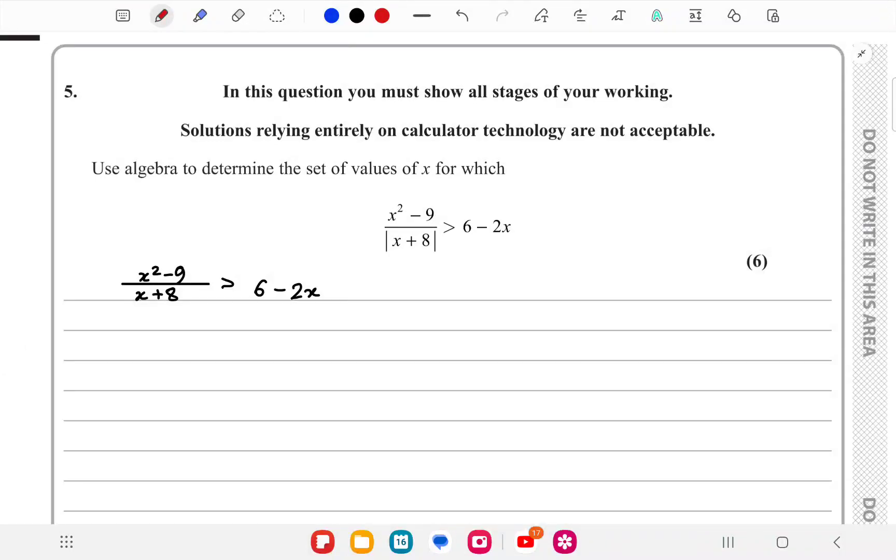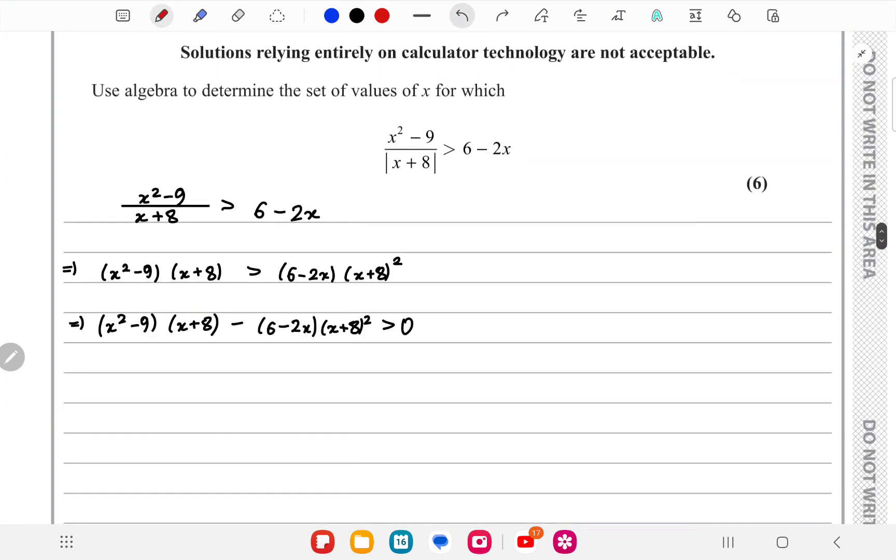We have an inequality involving a modulus, so at first we take the positive case. Now we have to multiply both sides with (x+8) whole square, so there's no uncertainty about the inequality sign. Because if x+8 was negative and we multiplied both sides with it, we'd need to flip the sign. But if we take (x+8) whole square, it would be positive regardless. So now we continue.